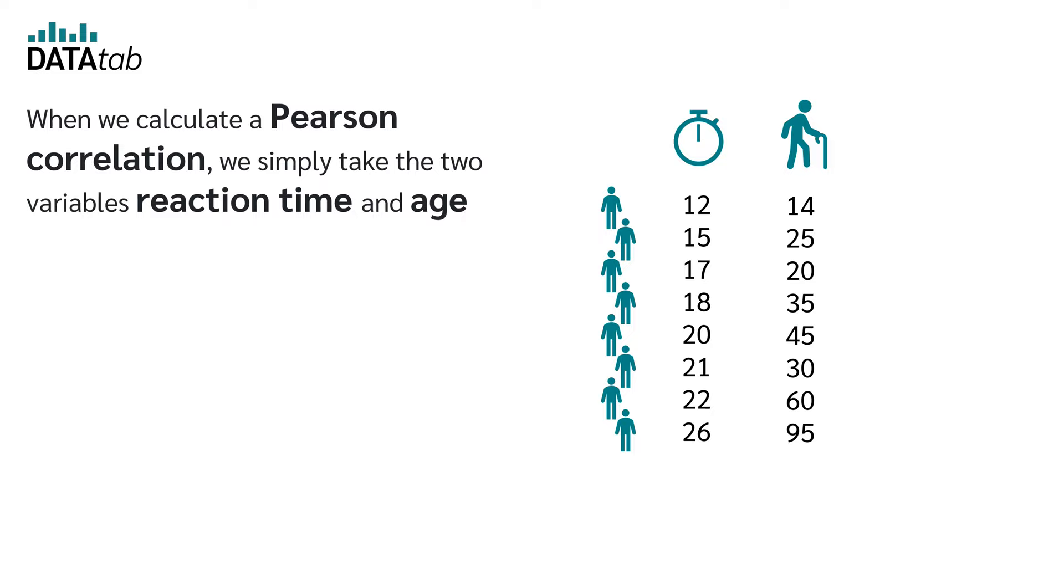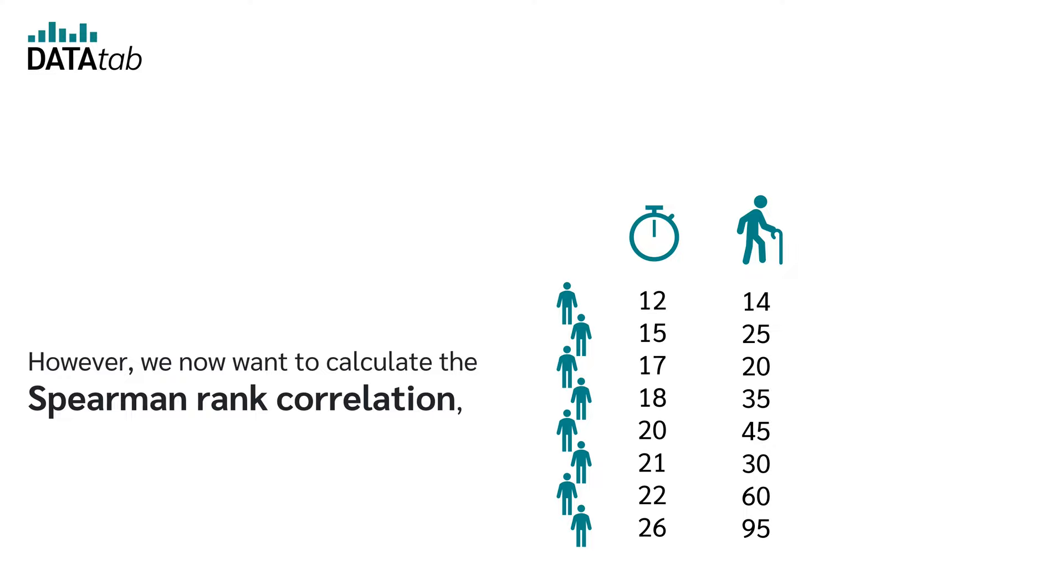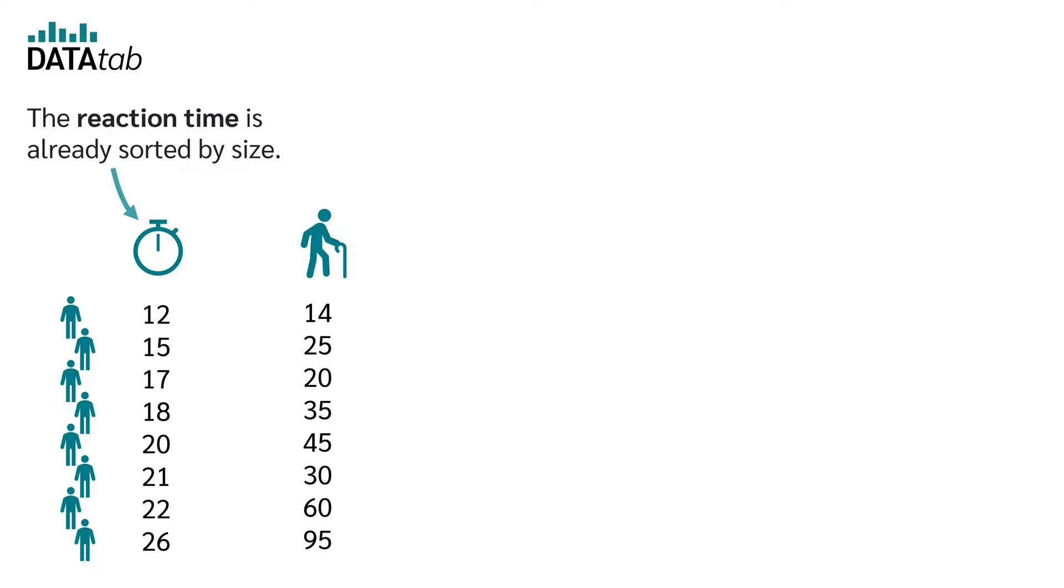When we calculate a Pearson correlation, we simply take the two variables reaction time and age and calculate the Pearson correlation coefficient. However, we now want to calculate the Spearman rank correlation, so first we assign a rank to each person for reaction time and age.